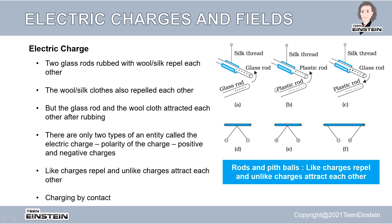This is illustrated here: a glass rod suspended by a silk thread is positively charged. When you bring another glass rod near it, they repel each other and the hanging rod moves away. Similarly, two plastic rods which are negatively charged repel each other. But if you bring a glass rod and a negatively charged plastic rod together, they attract each other.